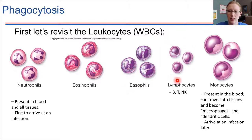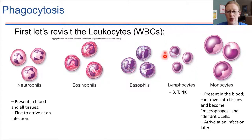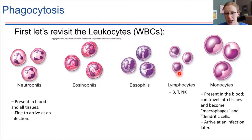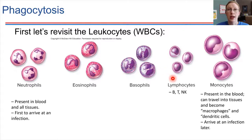The lymphocytes include things like B lymphocytes, T lymphocytes, and also natural killer cells. We'll be talking about these quite a bit when we talk about adaptive immunity, so we'll come back to that later in the chapter. These actually participate in both innate and adaptive immunity — they have a role in each. When we talk about adaptive immunity, we'll be looking at the production of antibodies specifically, which is what the B lymphocytes do.